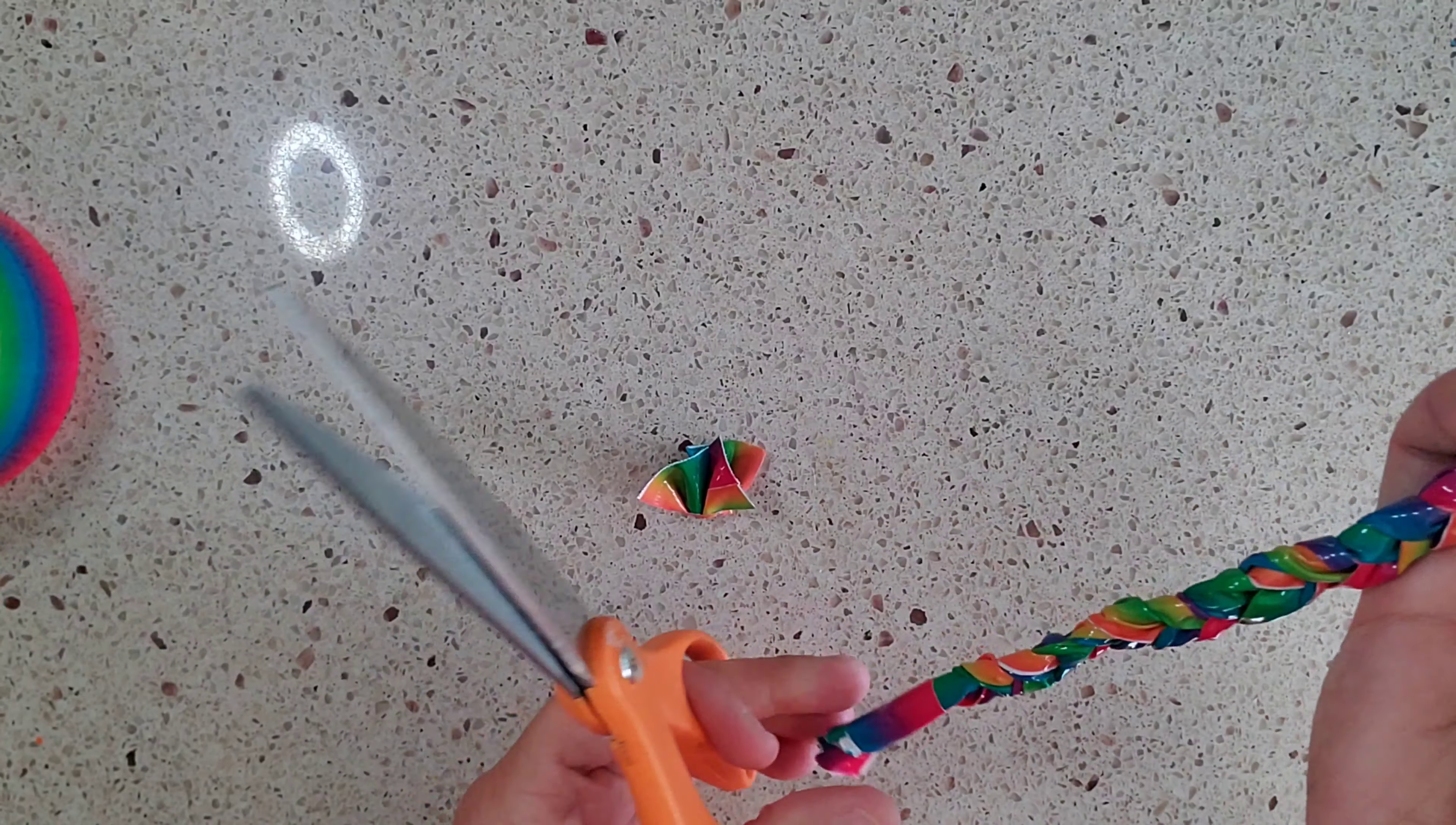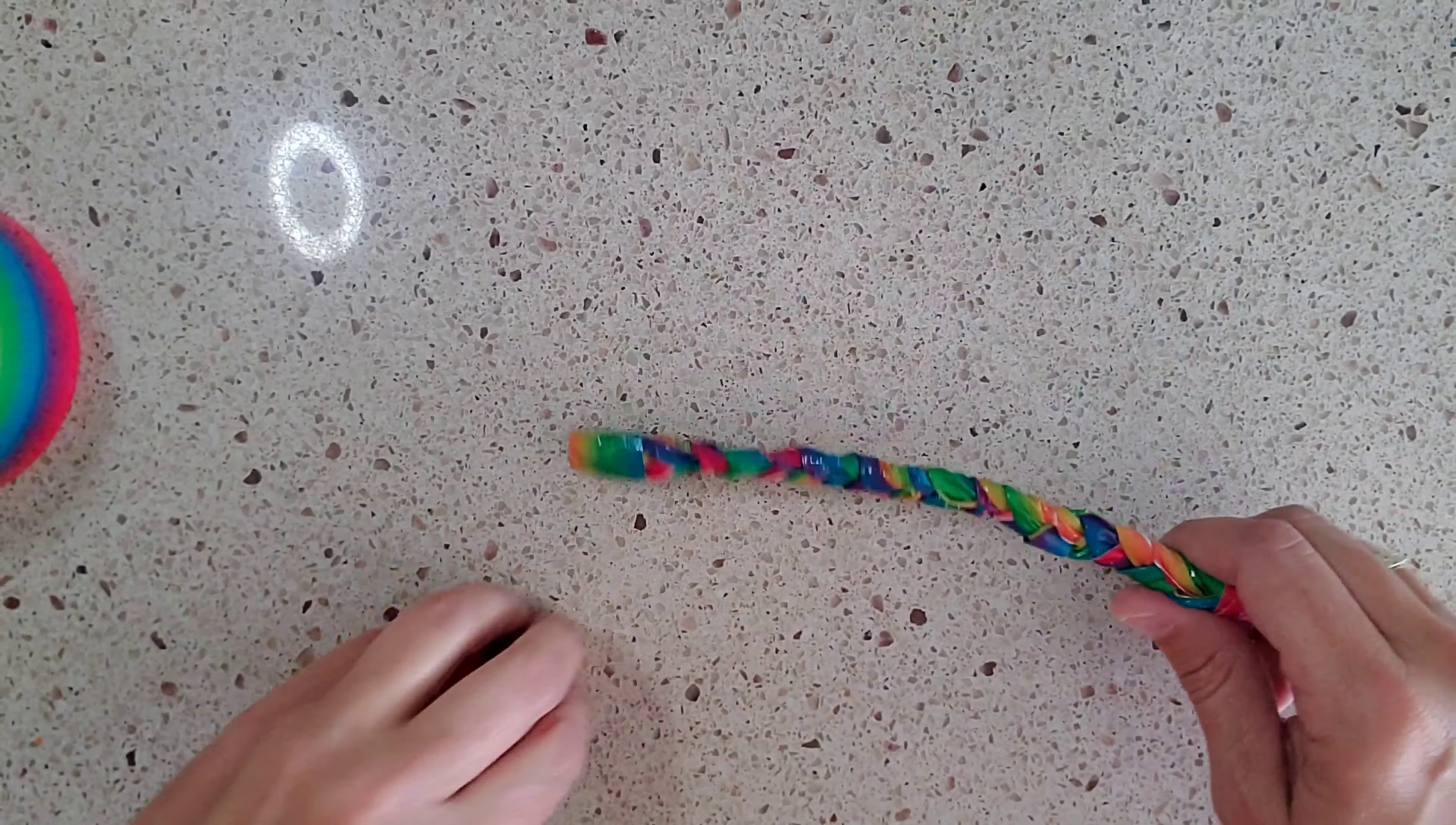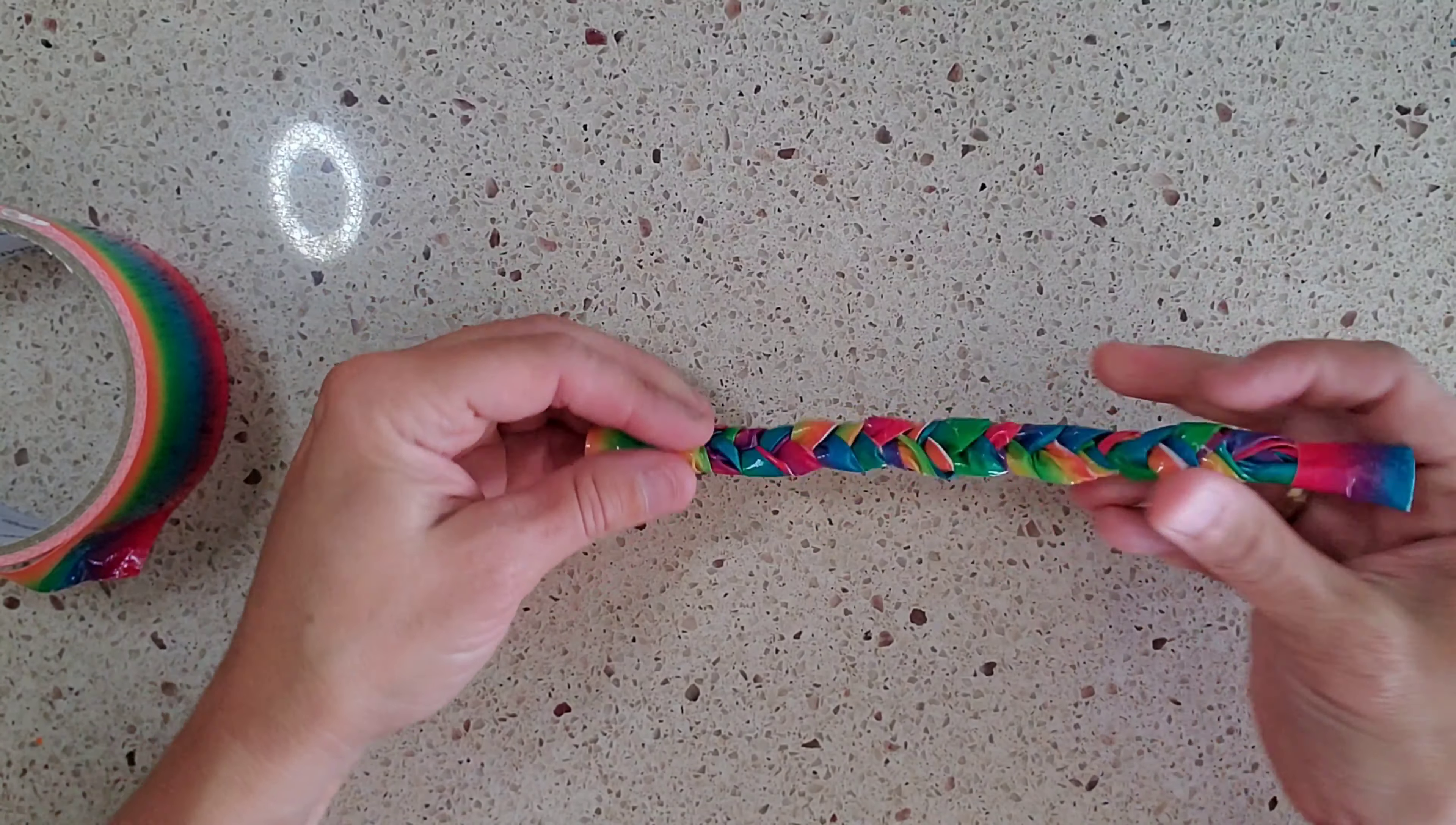And then you need your scissors to trim it up a little bit and you are going to cut the end and then you are going to cut the end here and then you have your braided bracelet.